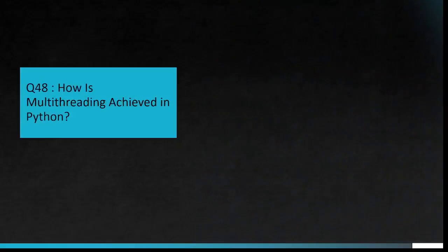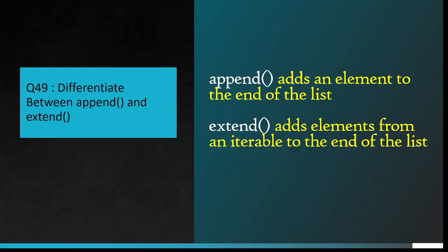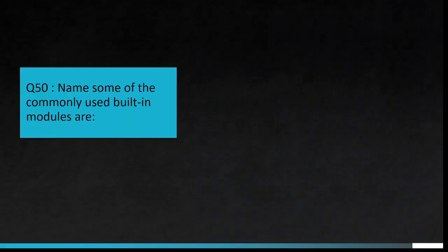Question number 48: How is multi-threading achieved in Python? Multi-threading in Python is achieved through context switching. Question number 49: Differentiate between append and extend. append() adds an element to the end of the list. extend() adds elements from an iterable to the end of the list.